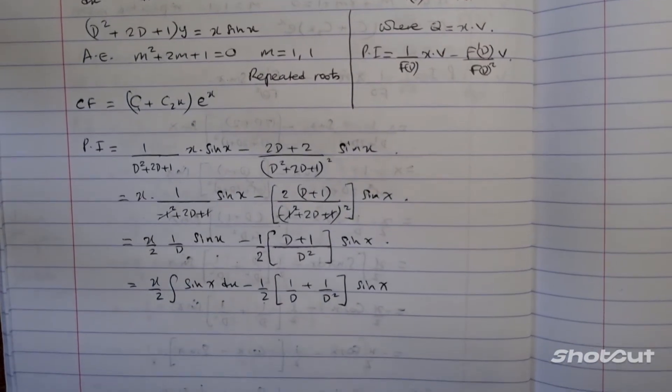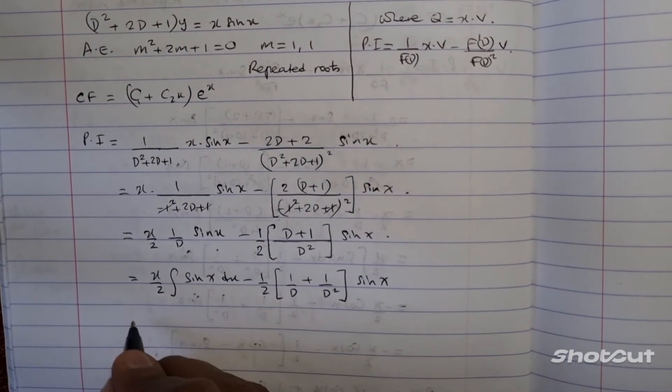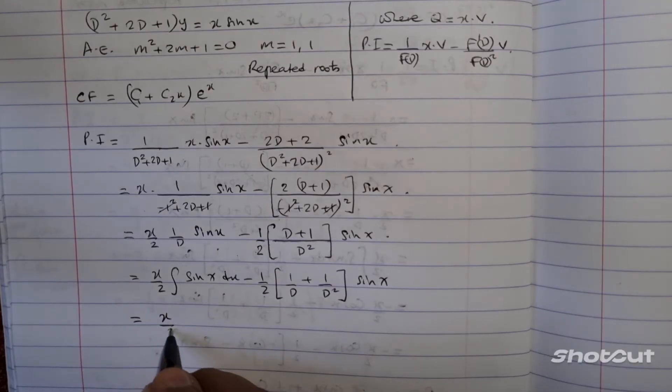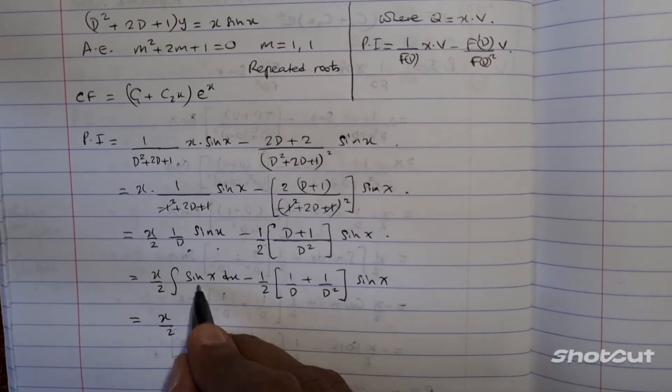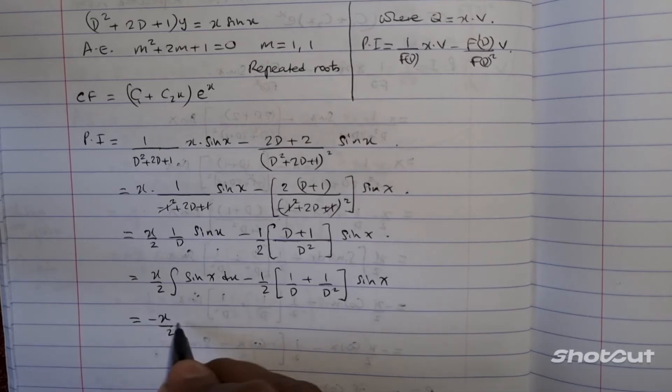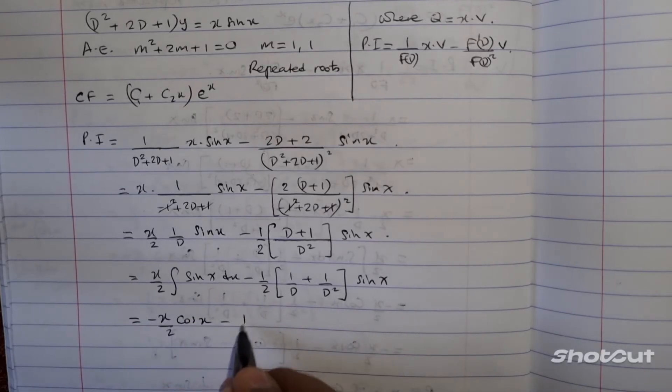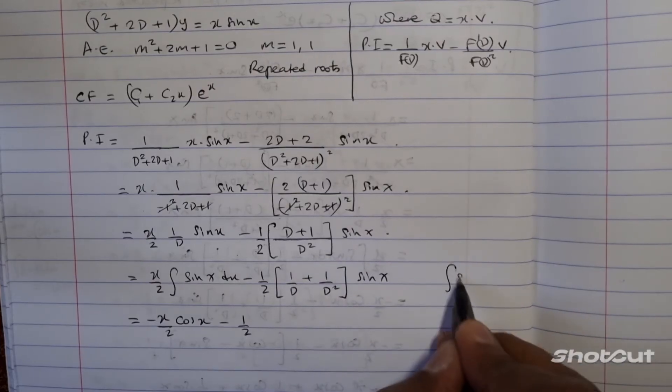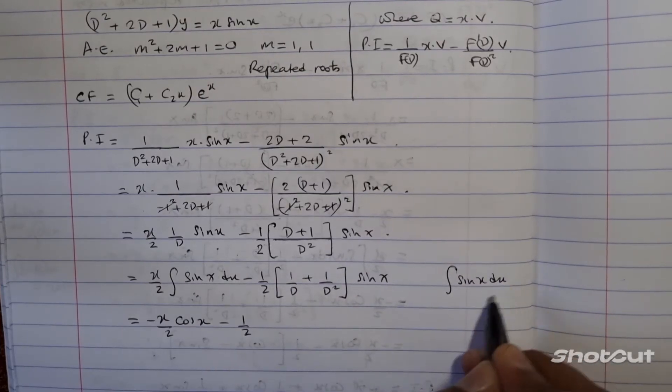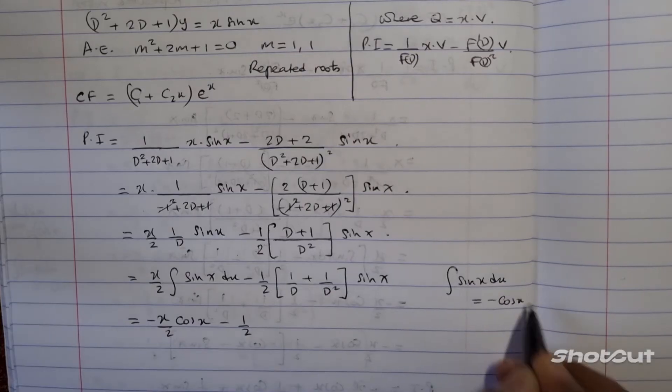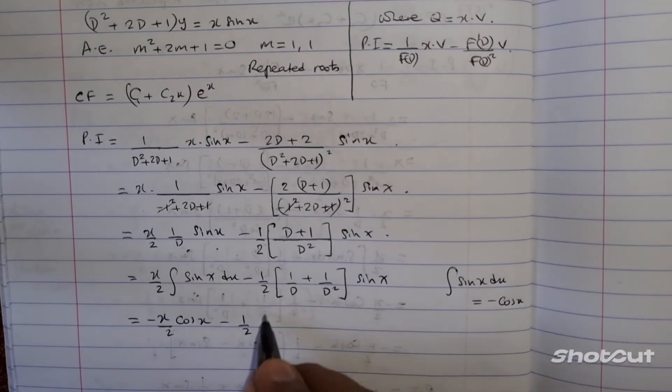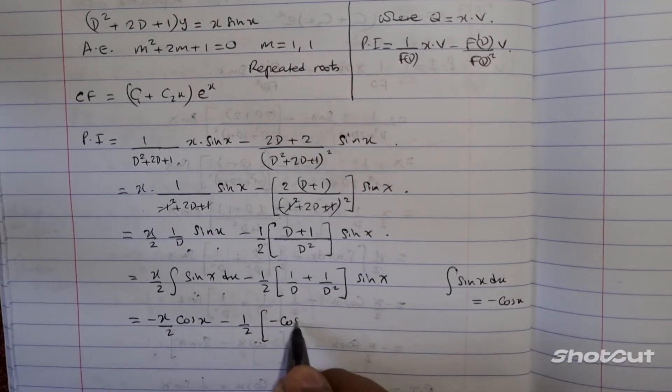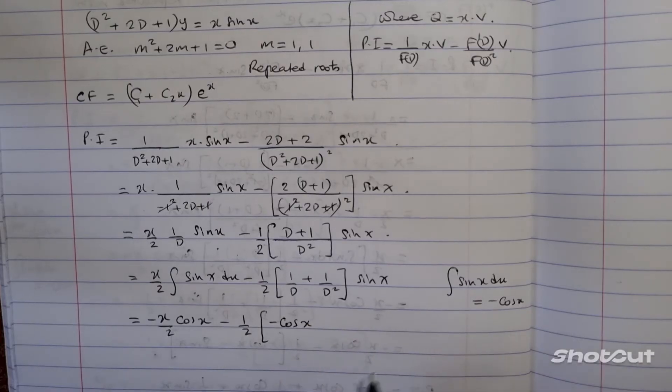So, from here, we can move further by saying that this is x over 2. Integrating sine x, you should be able to get negative cos of x, minus half into 1 over d is the integral of sine x. So, the integral of sine x, dx, we just said it was minus cos of x. So, this becomes then, minus cos of x. And now,